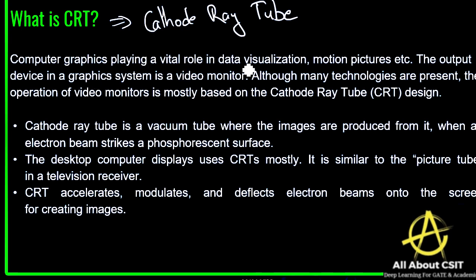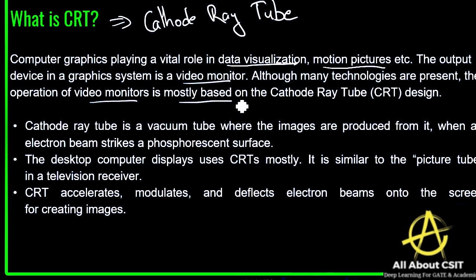Nowadays computer graphics play a vital role in areas such as data visualization and motion pictures. The output device in a graphic system is the monitor — a video monitor. Although many technologies exist today, the operation of video monitors is mostly based on the cathode ray tube design, which is why we need to understand what exactly the CRT is.